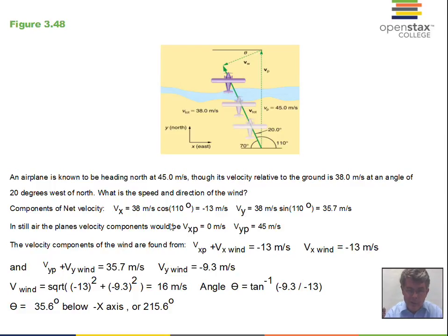The velocity components of the plane in still air: it's headed straight north, not going left or right, so the x component is zero. The y component is 45 meters per second. The wind does vector addition to the plane's components. Writing an x equation: the x component of the plane velocity plus the x component of the wind velocity equals -13 meters per second, the x component of the total velocity.